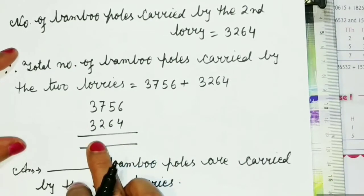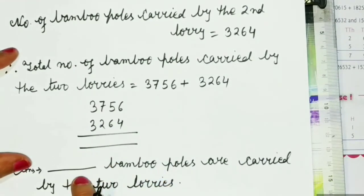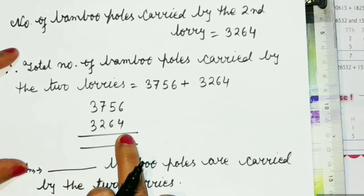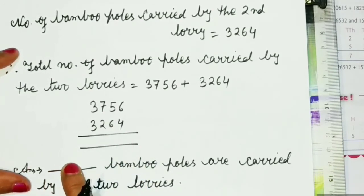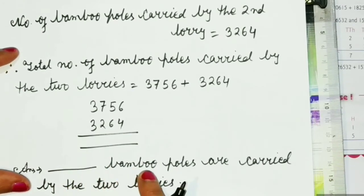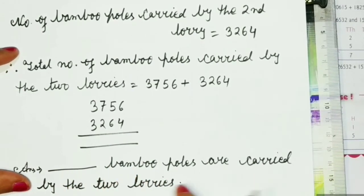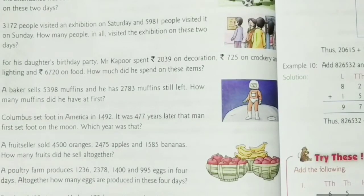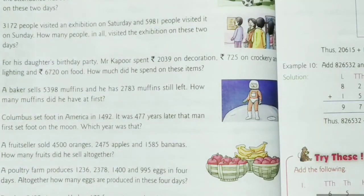Students, you have to do the calculation and write the answer. Write whatever digit comes in this blank space, then write 'bamboo poles are carried by the two lorries.' Hope by the time you all complete this exercise. My next video will be about story problems of subtraction. Till then, stay home, stay safe, and don't forget to like and subscribe.